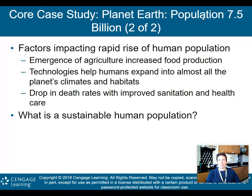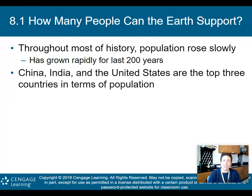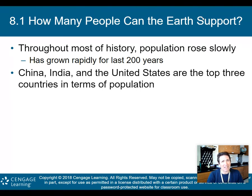We also had a drop in death rates with improved sanitation and healthcare over the past 100 to 150 years. So what is a sustainable human population? That's the big question we'll try to answer. Throughout most of history, population rose slowly, but in the past 200 years it has grown rapidly — with China, India, and the United States being the top three countries in terms of population, though not necessarily in terms of current population growth.